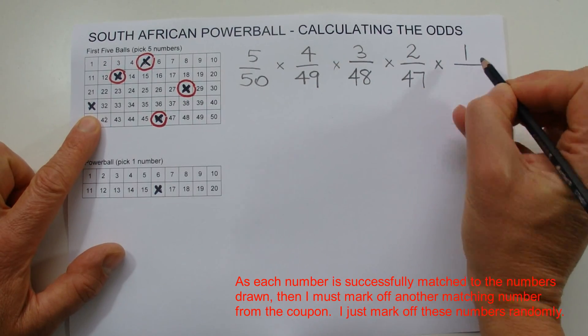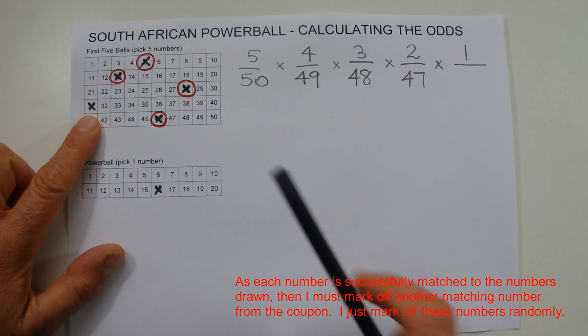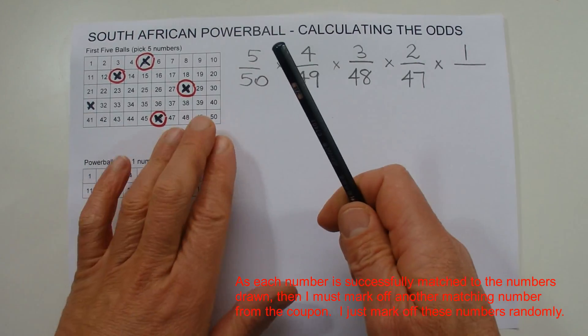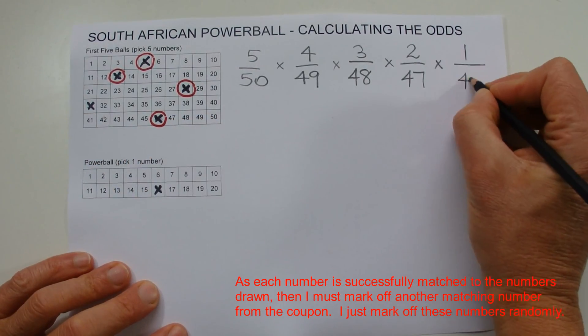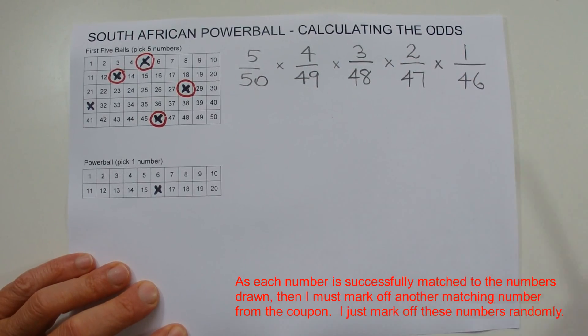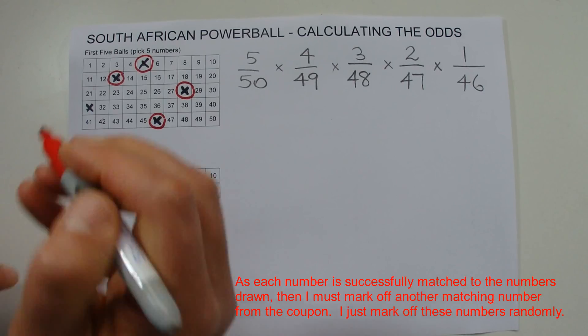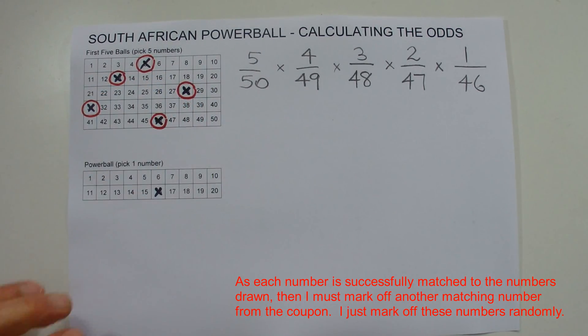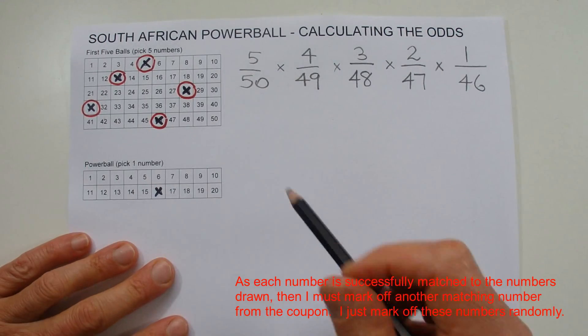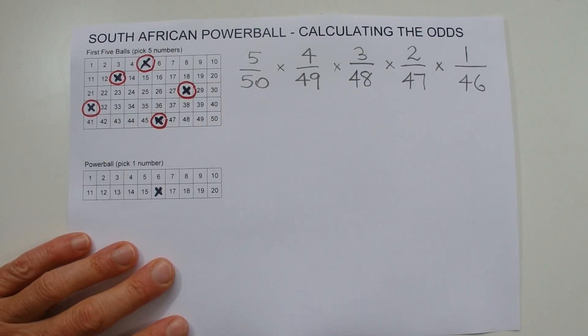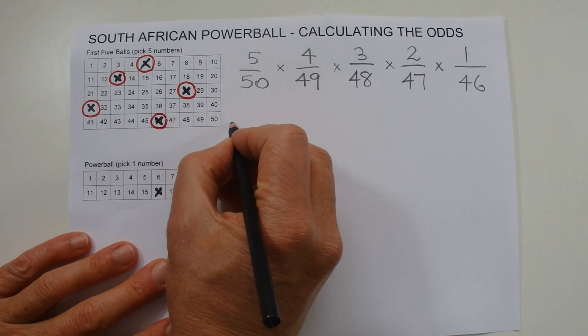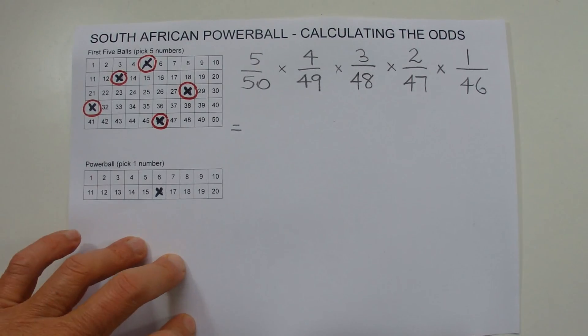So to match the last number on your coupon, you've only got one number left to match. So you've got one chance in 46 because you've already had four numbers been drawn, and so then you've only got 46 numbers left in the barrel. And to do that, this is the odds. So all you've got to do now to work out the odds of matching those first five numbers is to multiply all those numbers across the page.